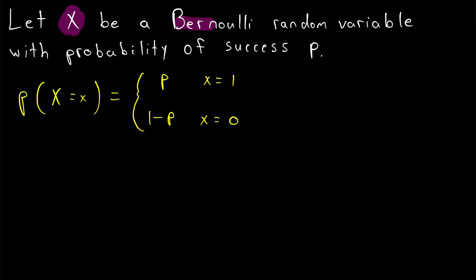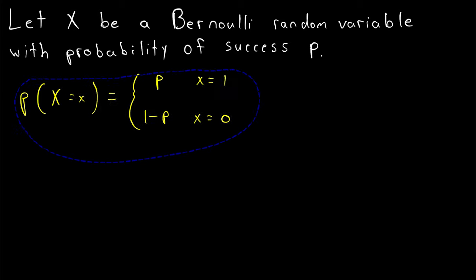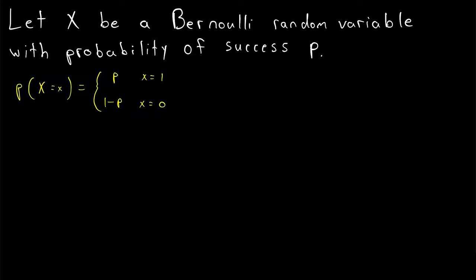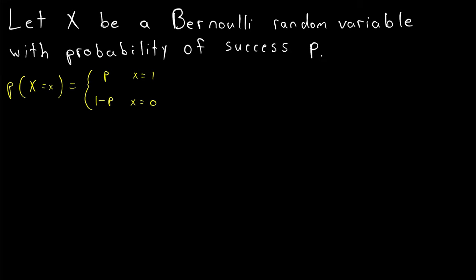Quick recap: saying x is a Bernoulli random variable means that x is equal to 1, considered a success, with probability p, and the rest of the probability, 1 minus p, is where x is equal to 0, which is considered a failure. I'll leave links in the description to some of my other lessons on Bernoulli random variables and Bernoulli trials.